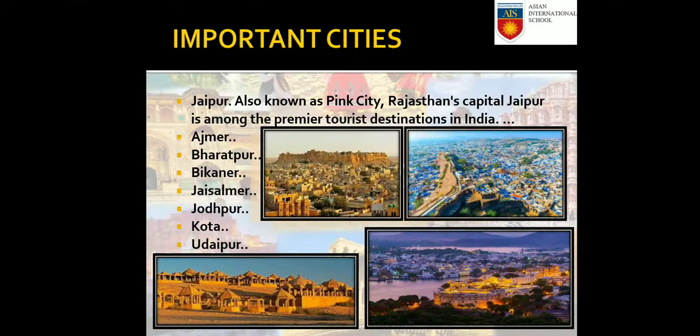Important cities of Rajasthan: Jaipur, also known as the Pink City, is Rajasthan's capital and among the premier tourist destinations in India. Other important cities include Ajmer, Bharatpur, Bikaner, Jaisalmer, Jodhpur, Kota, and Udaipur.